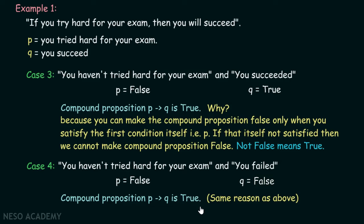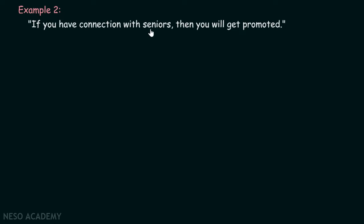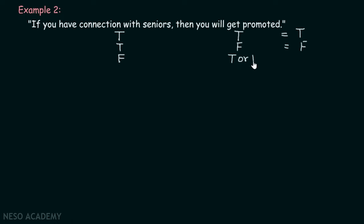Let's consider one more example to cement this concept: 'If you have connection with seniors, then you will get promoted.' If you have connections and you get promoted, the statement is true. But if you have connections and you don't get promoted, you feel cheated — that statement is false. However, if you have no connection with seniors, it doesn't matter whether you get promoted or not — you cannot argue that this statement is false.